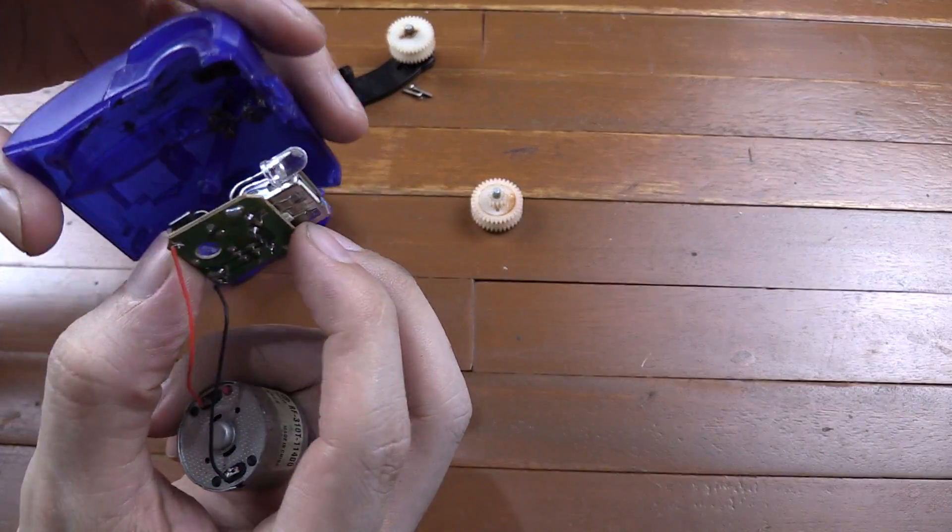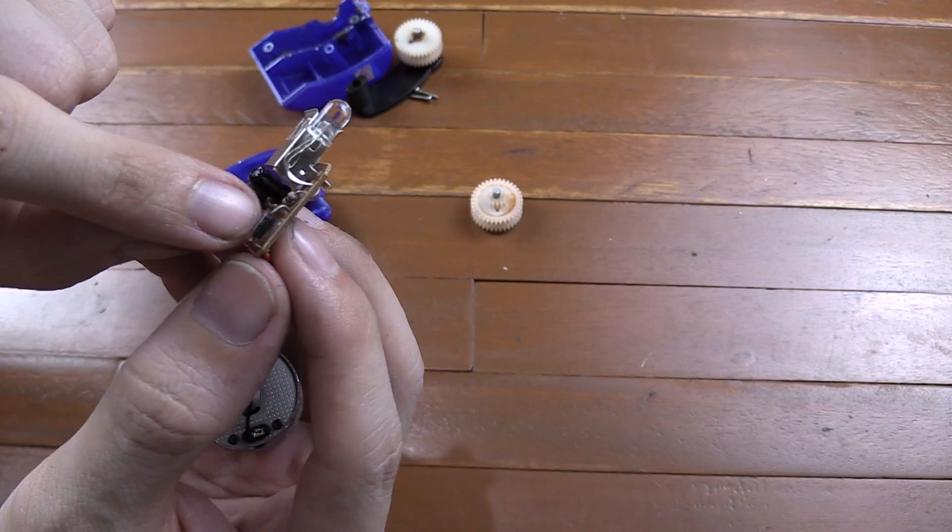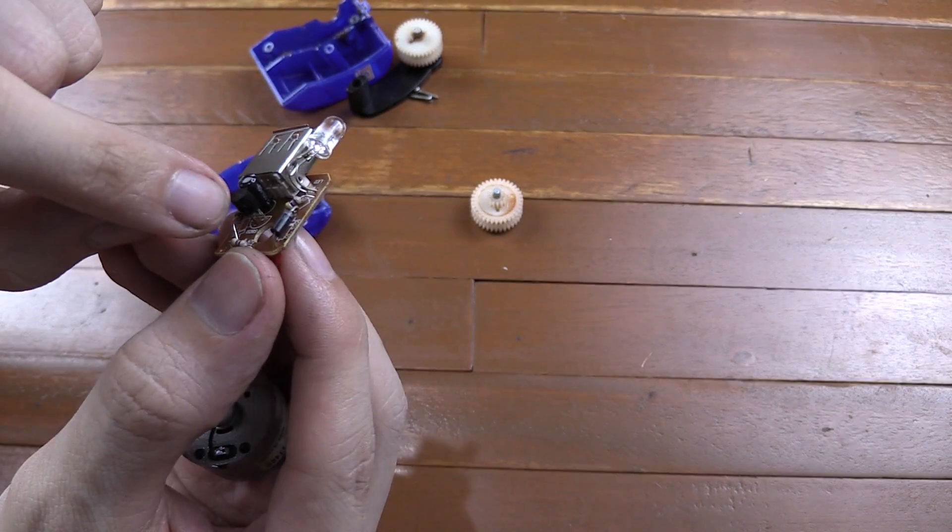And then a small circuit board. What do we have here? We have a diode, a small transistor.